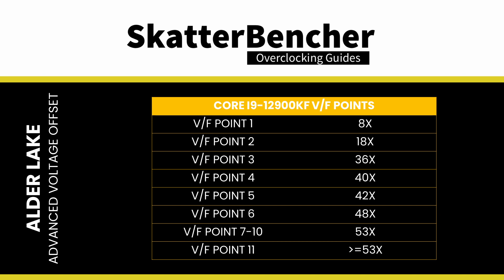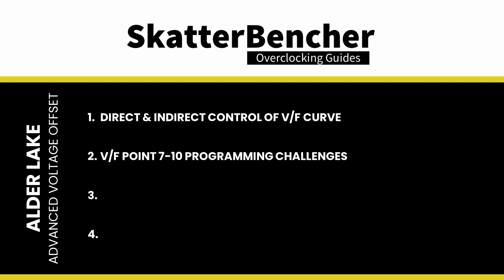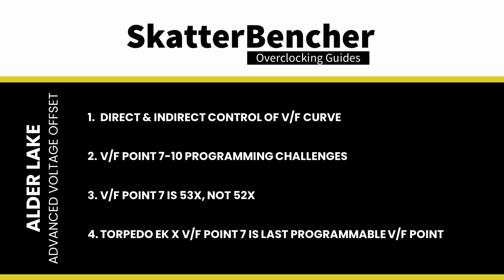When you manually overclock, the OC ratio is the highest ratio you configure across all of your settings, including turbo ratios, per-core ratio limits, and OC TVB. Now let's return to the VF points. On the Core i9-12900KF, the VF points are by default configured as follows. We will discuss four topics: direct and indirect control of the VF curve; programming issues with VF points 7 to 10; the Core i9 VF point 7 ratio being 53x and not 52x; and on the Torpedo EKX, the final VF point in the BIOS being VF point 7.